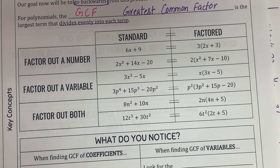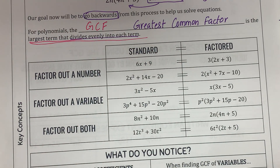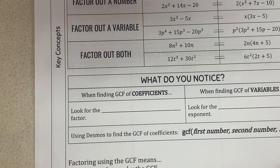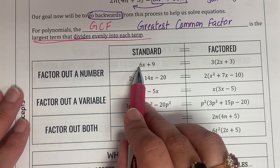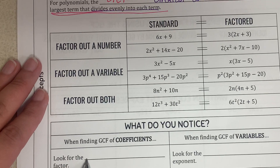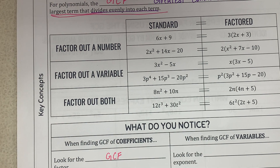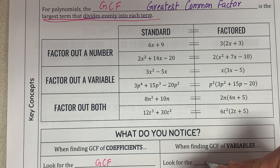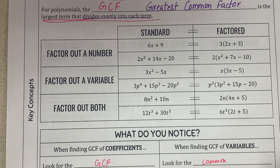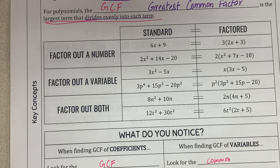Our goal is mainly to look for the greatest common factor — the largest term that evenly divides each term. It has to divide everything, not just one or two terms. When finding the GCF of coefficients, look for the greatest common factor of those numbers. When finding the GCF of variables, look for the lowest common exponent present in all terms.